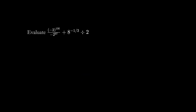Here we have negative 2 to the 100, which is a positive number, divided by a negative number. So the first term must be negative. We have 2 to the 100 divided by 2 to the 97, which is 2 to the 3, which gives negative 8.